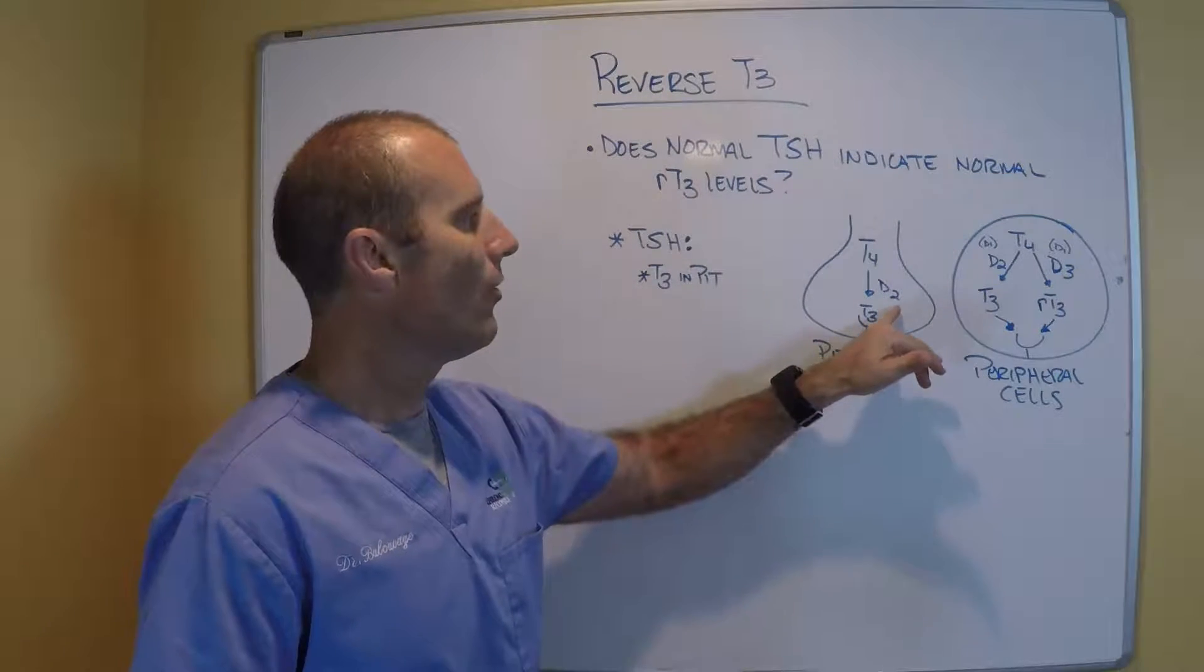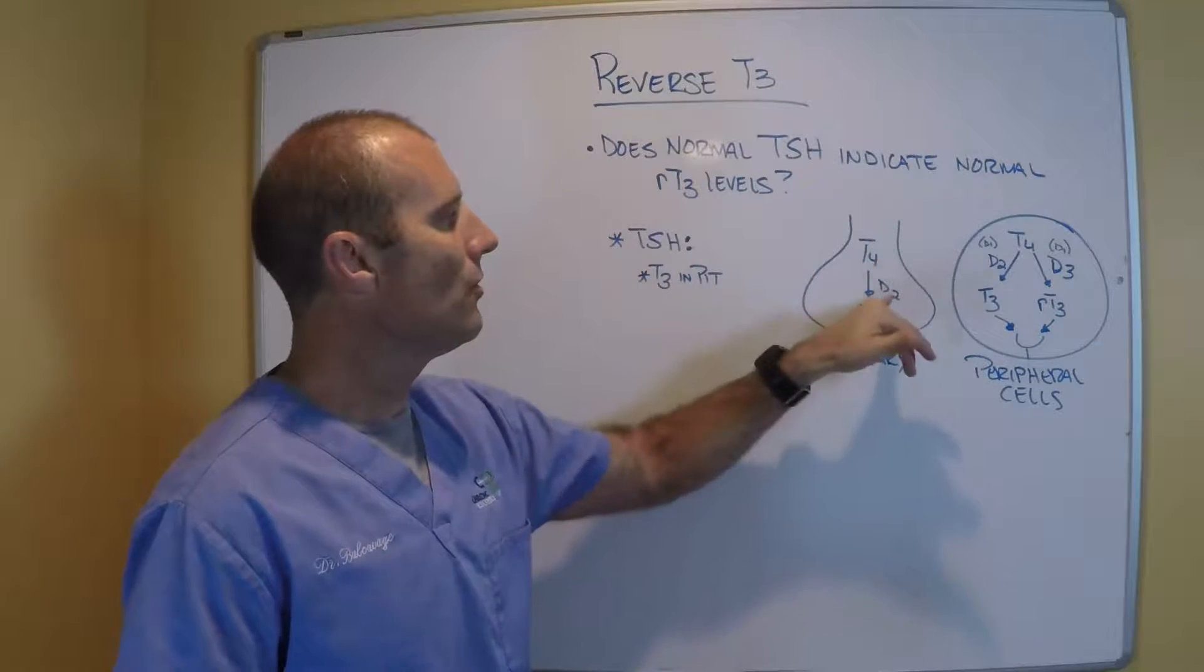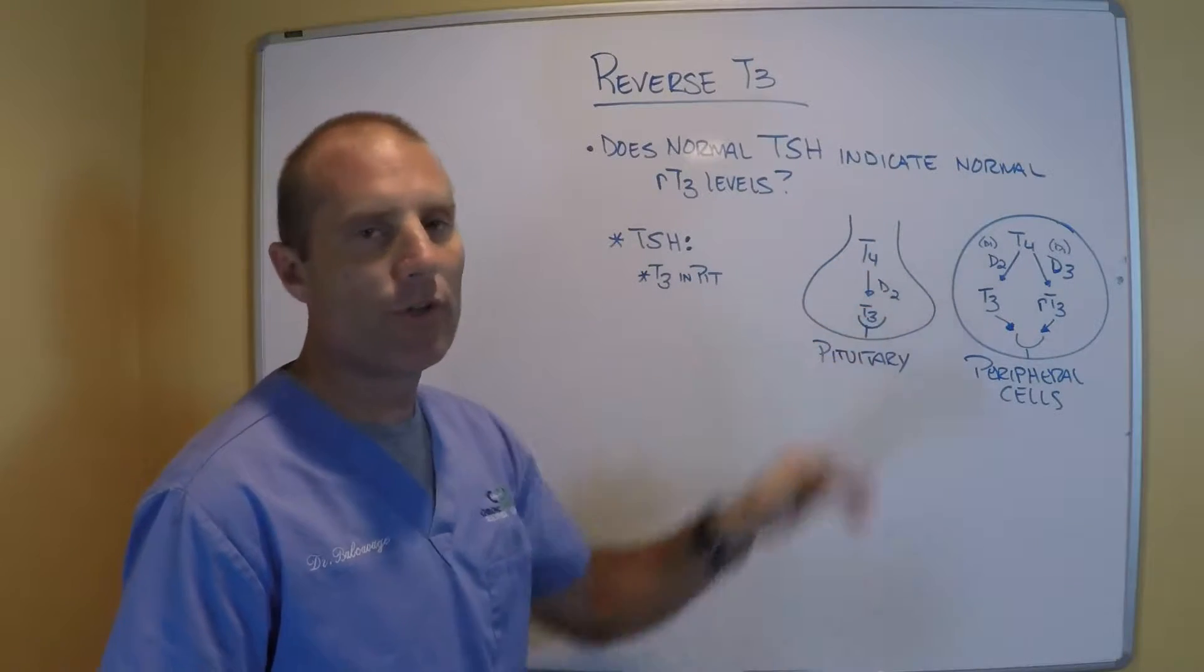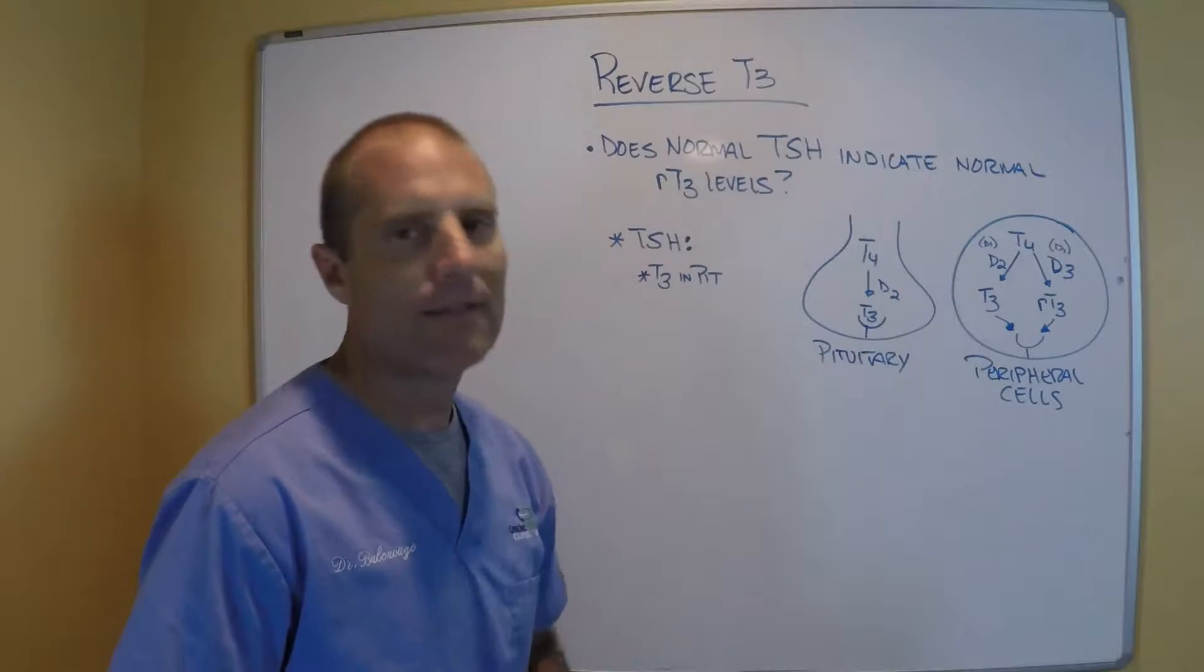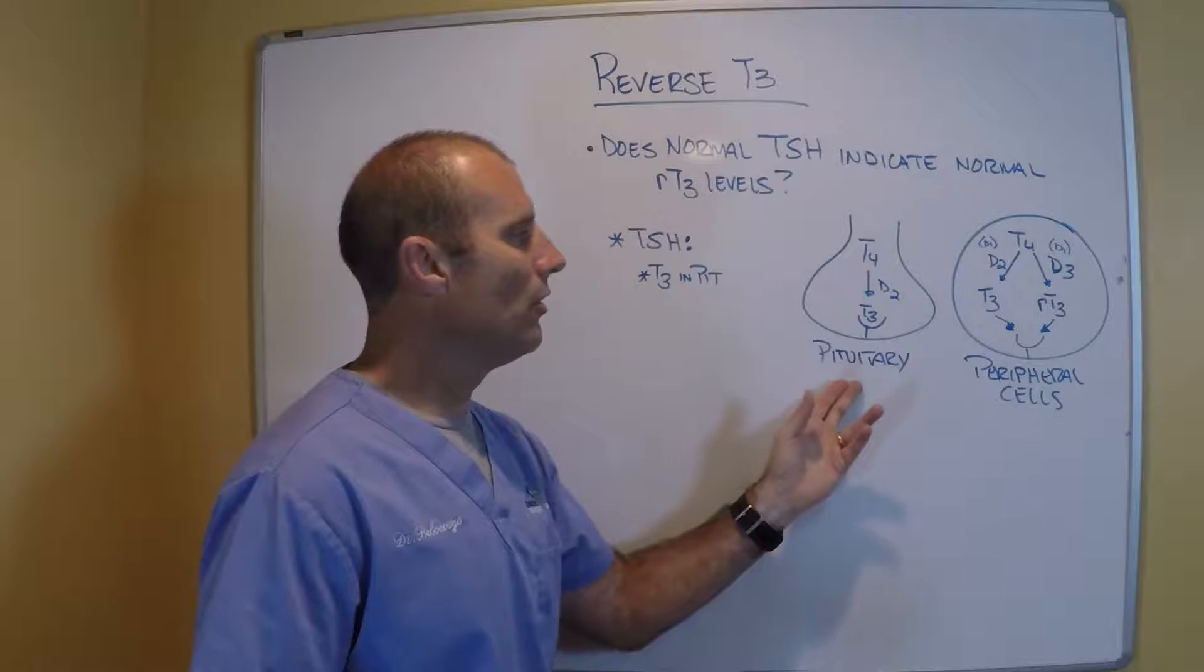And the pituitary gland only has D2 enzyme. There's no enzyme in the pituitary gland to convert T4 to reverse T3 to compete with T3. So the pituitary gland would be looking normal.